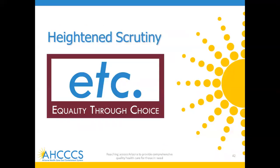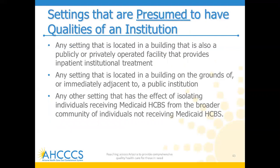Heightened scrutiny is a process that CMS developed for settings that are presumed to have the qualities of an institution. Some of the prongs for those qualities of an institution include: any setting located in a building that is also a publicly or privately operated facility that provides inpatient institutional treatment; any setting located in a building on the grounds of or immediately adjacent to a public institution; and any other setting that has the effect of isolating individuals receiving Medicaid from the broader community. Those first two prongs are really black and white and easy to figure out. It doesn't mean that you cannot be an HCBS provider — it just means we have to go through this additional heightened scrutiny process to show CMS that you can become compliant or that you already are.